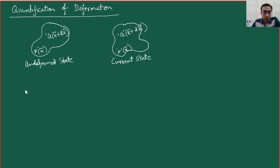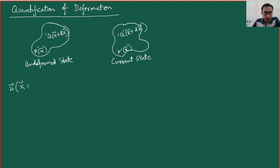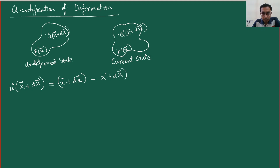To properly carry out the quantification of deformation, we consider the displacement vector of point Q rather than point P. That will be given by u(X + dX), which by definition should equal the final position vector — given by x plus d(small x) — minus the initial position vector, capital X plus dX.